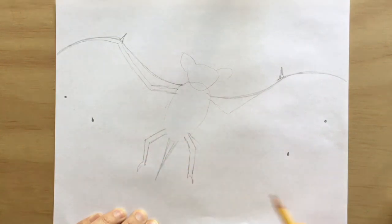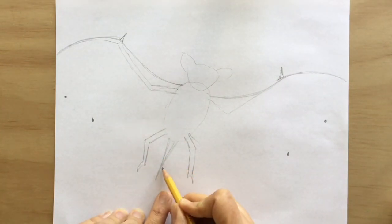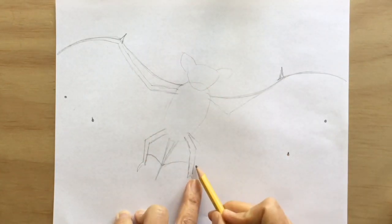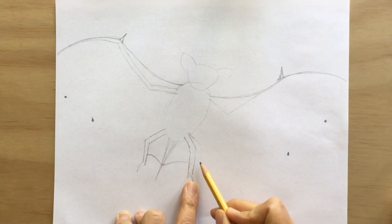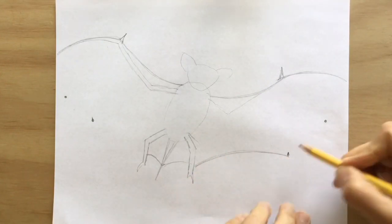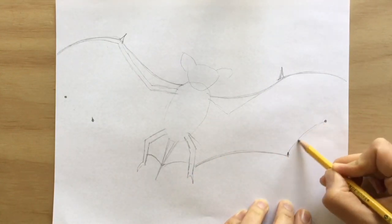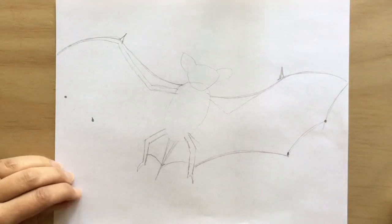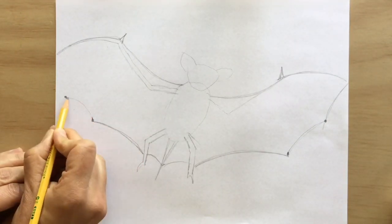Now it's time to connect the dots. Bats have what people call a hand wing. To connect your wings, start a little ways up the tail. Draw arched lines between the tail and the legs. Then, from the leg to where the fifth finger in the hand wing is. Then, from the fifth finger to where the fourth finger is. And finally, connect the fourth finger to where the third and the second finger reside.